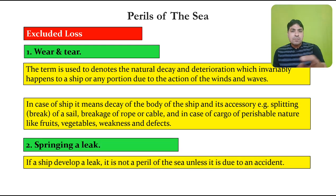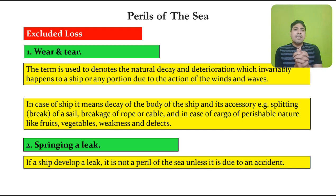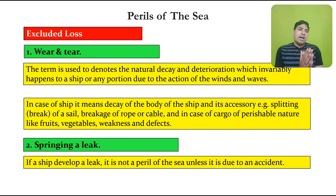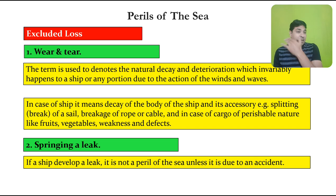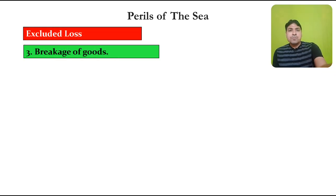Another excluded loss is springing a leak. If a ship develops a leak on its own, it is not a peril of the sea unless it is due to an accident. If the leakage causes damage to the cargo, the insurance company will not be liable, because springing a leak is an excluded loss. But if the leak developed due to an accident, then it will come under perils of the sea.